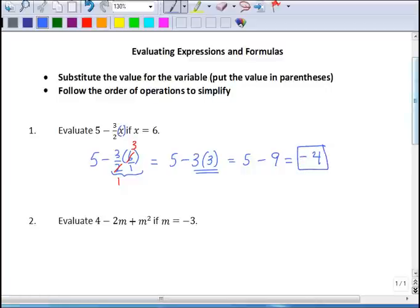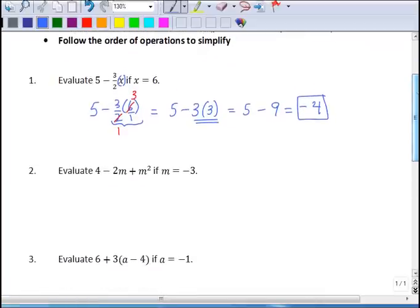Second example here: evaluate 4 minus 2m plus m squared if m is negative 3. And I'm going to put some parentheses in here around my m so you can see where they go. They go between the m and the exponent if you have exponents. So this is going to be 4 minus 2 times negative 3 plus, in parentheses, negative 3 squared.